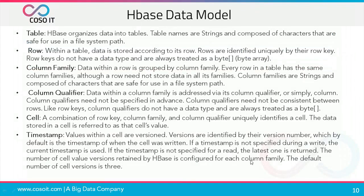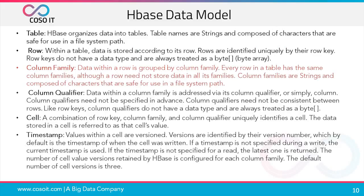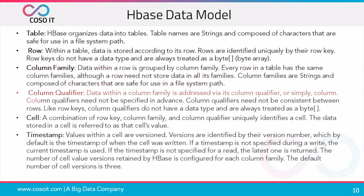To summarize the HBase data model: a table — HBase organizes data into tables; table names are strings composed of characters safe for use in a file system path. Within a table, data is stored according to its row, and rows are identified uniquely by the row key. Row keys do not have a data type and are always treated as byte arrays. Data within a row is grouped by column family; every row in a table has the same column families, although a row need not store data in all its families. Column qualifiers address the data within a column family and need not be specified in advance or be consistent between rows.